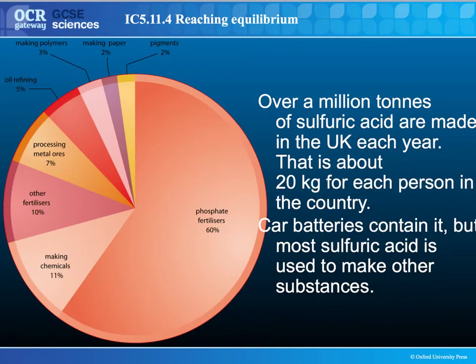We're going to look at the contact process as a context for a reversible reaction and equilibrium. The contact process makes sulfuric acid, which is a really important chemical used in all sorts of processes. About 60% of all sulfuric acid is used to make fertilisers. It's also used in car batteries, processing of oils, making polymers, paper, pigments and paints.